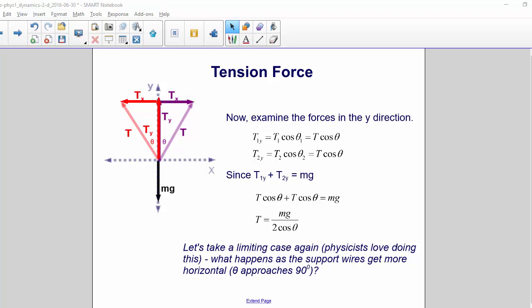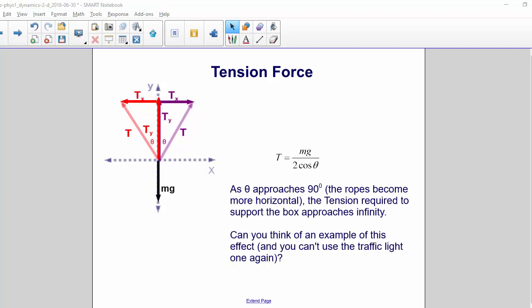what happens as the support wires get more horizontal as theta approaches 90 degrees? As theta approaches 90 degrees, the ropes become more horizontal, and the tension required to support the box approaches infinity.